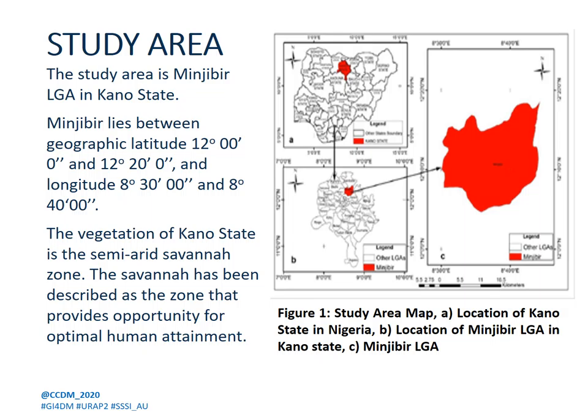This is the study area. We have Kano State here on the map of Nigeria, and you can see the Minjibil Local Government area. The vegetation of Kano State is a semi-arid savannah zone, which has been described as the zone that provides the opportunity for optimal human attainment.